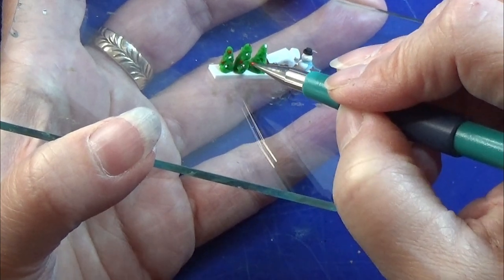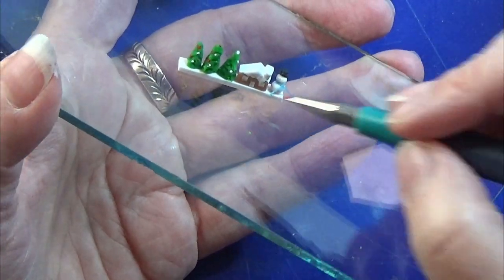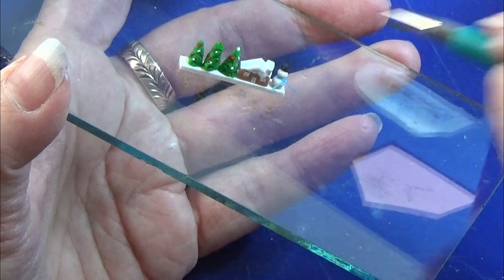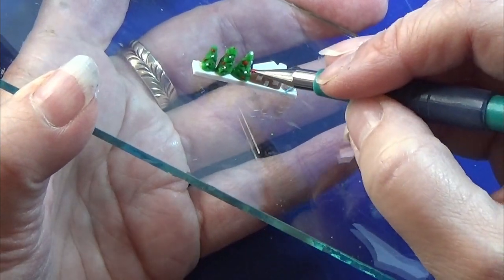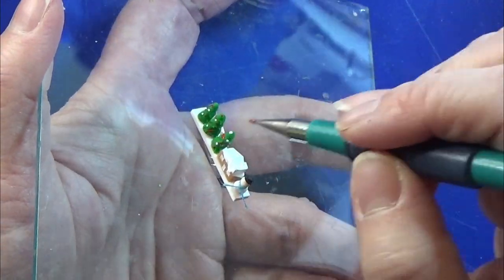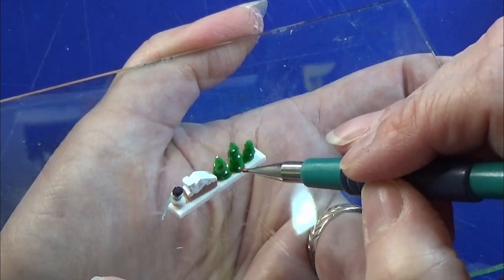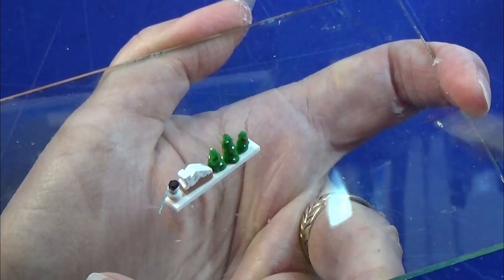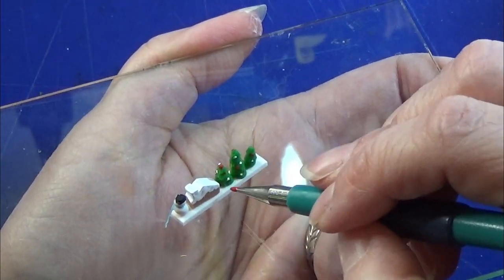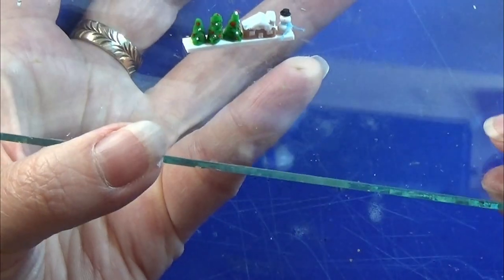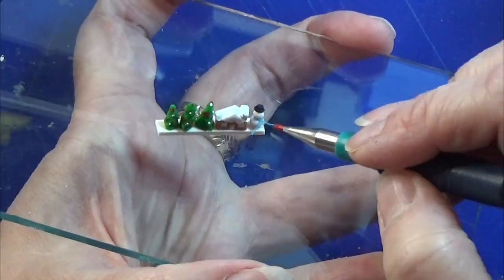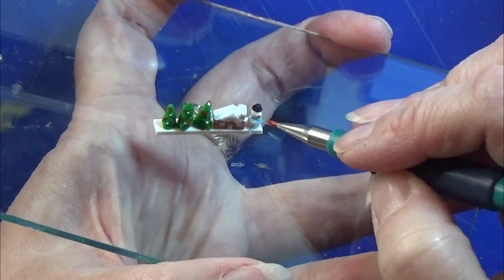Then I am switching to a red paint and making some red dots on the trees. And I am also going to give the snowman a red dot for the carrot for his nose.